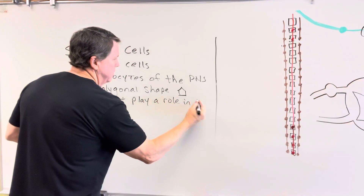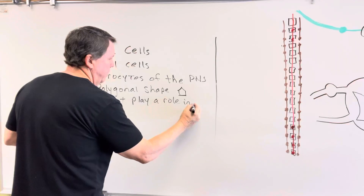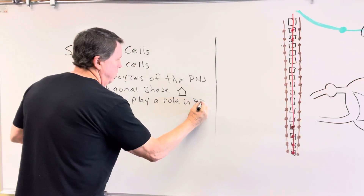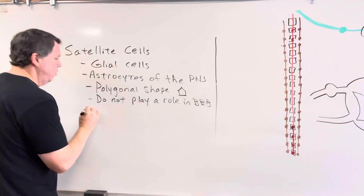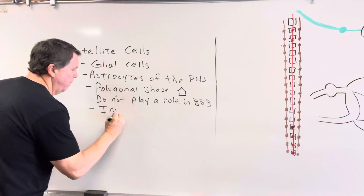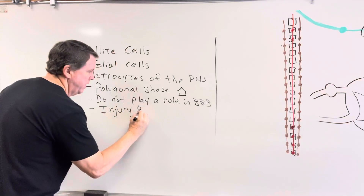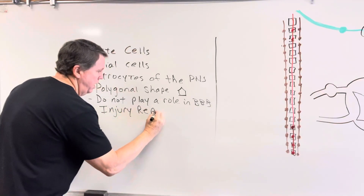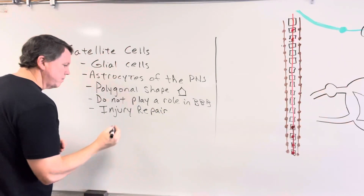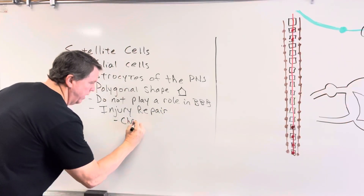Obviously, since they're in the PNS, satellite cells don't play a role in the blood-brain barrier. So what do they do? They're responsible for helping with injury repair in the PNS, and they also play a role in chronic pain, which we'll talk about in just a little bit.